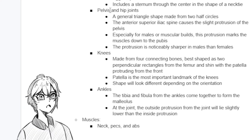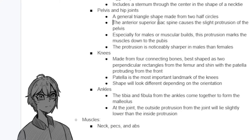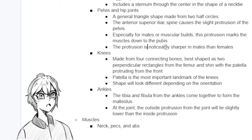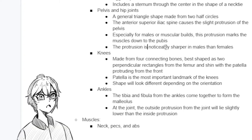Next are the pelvis and the hip joints. The easiest way to draw the pelvis is a general triangle shape made from two half circles. What's important to note is the anterior superior iliac spine, which causes the slight protrusion of the pelvis down towards the crotch area. Especially for males or muscular builds, you'll notice this protrusion as it marks the muscles down to the pubis — normally the V-taper line associated with male beauty standards. This protrusion is noticeably sharper in males. For female proportions, go for generally softer lines.